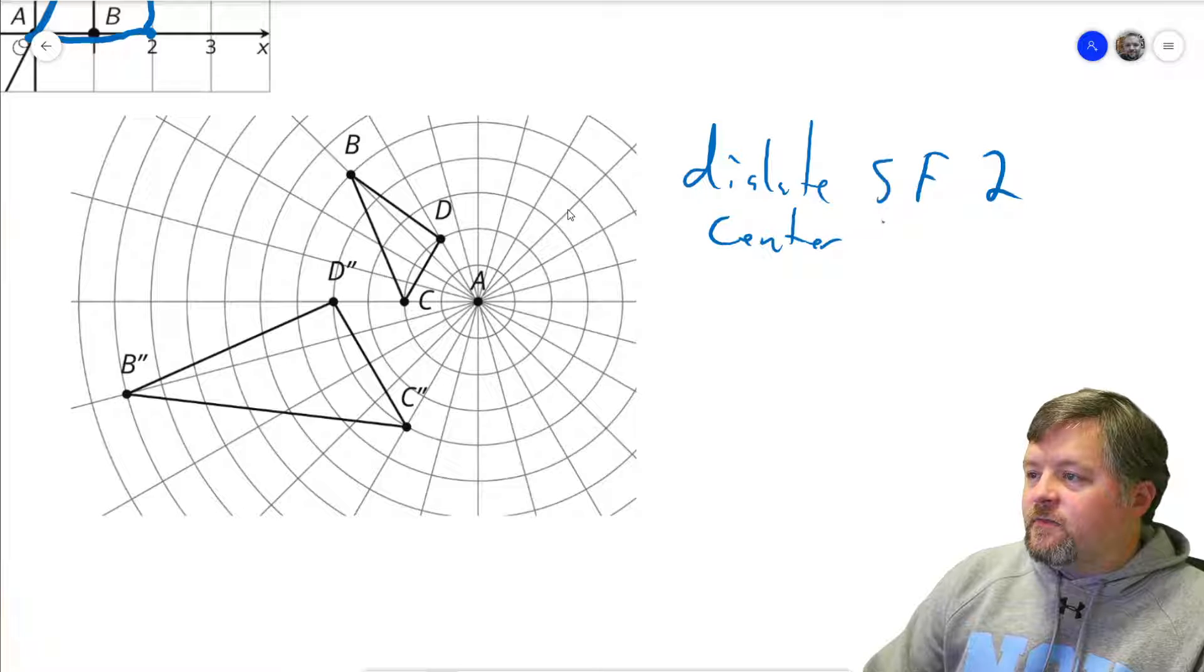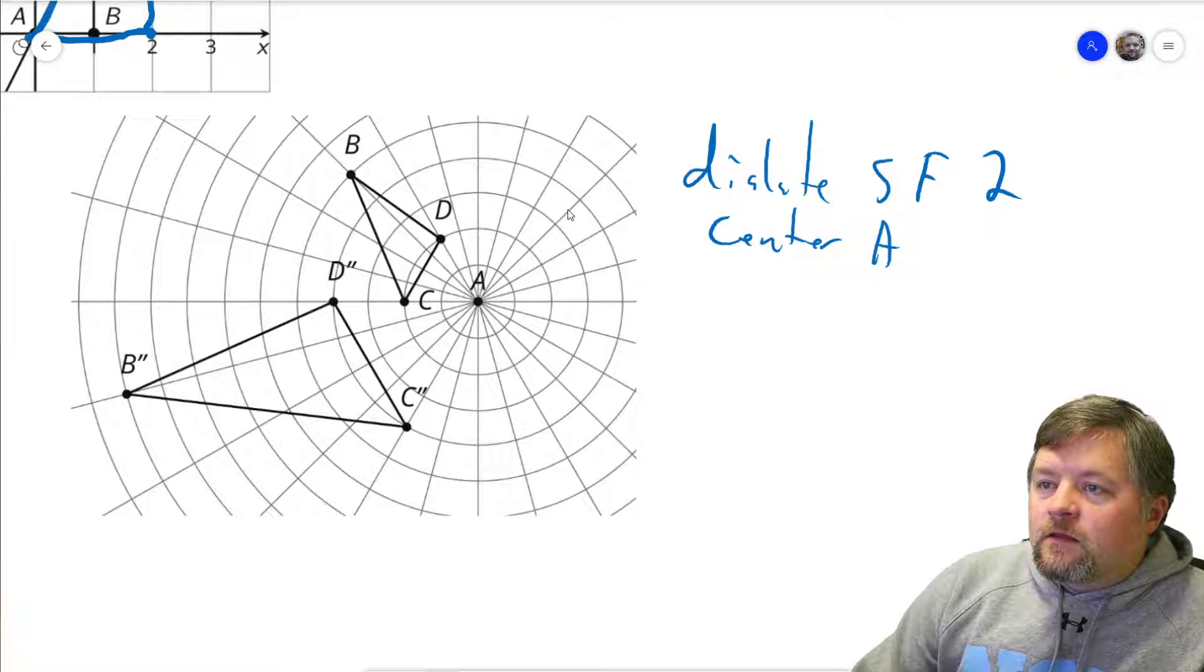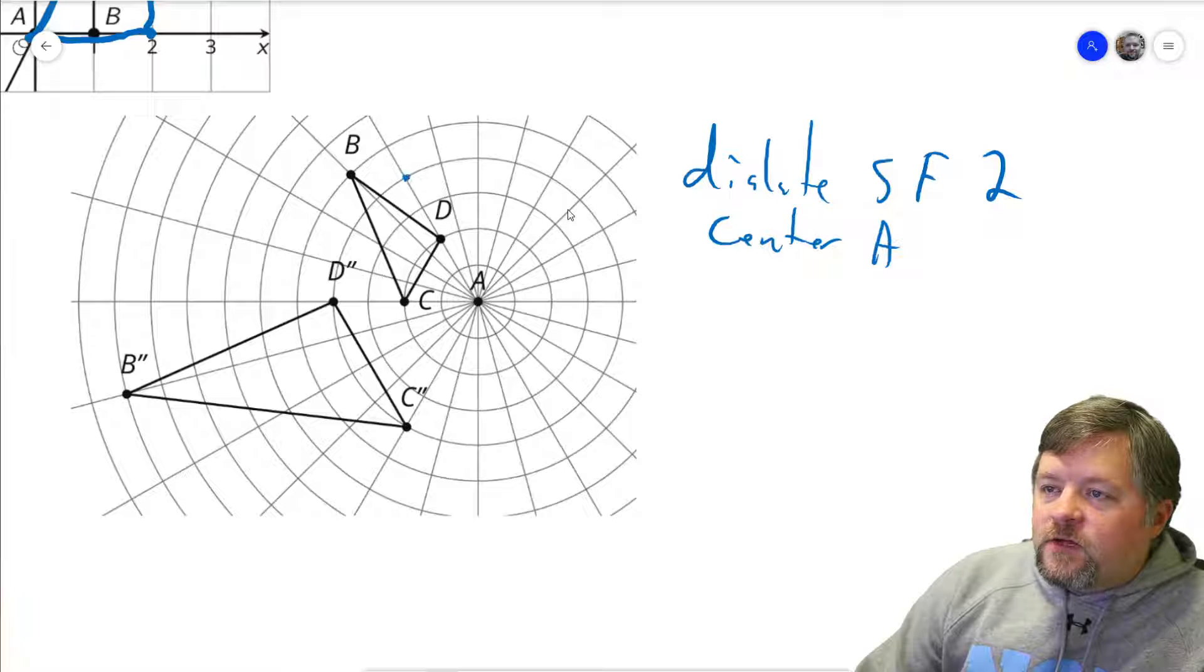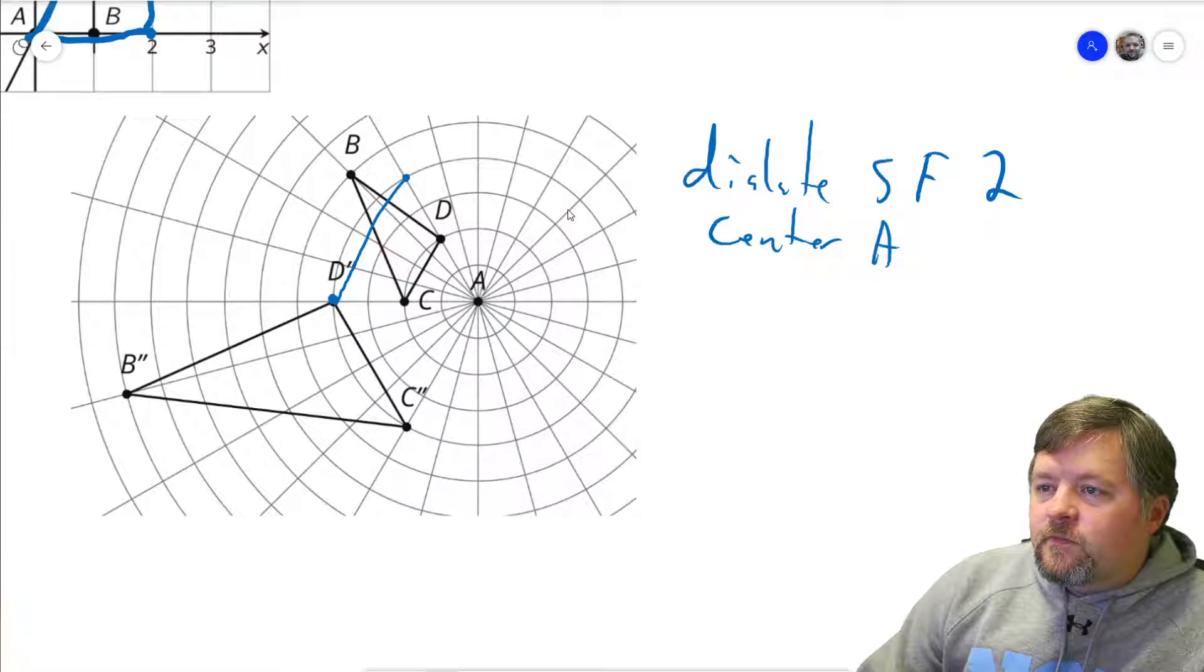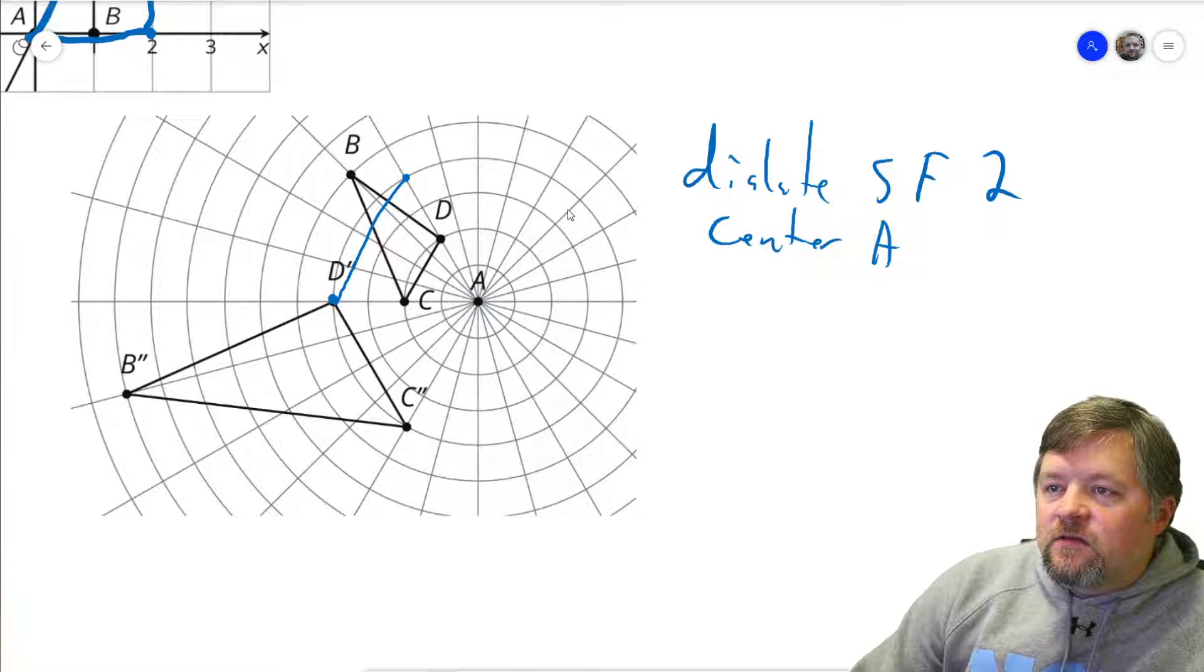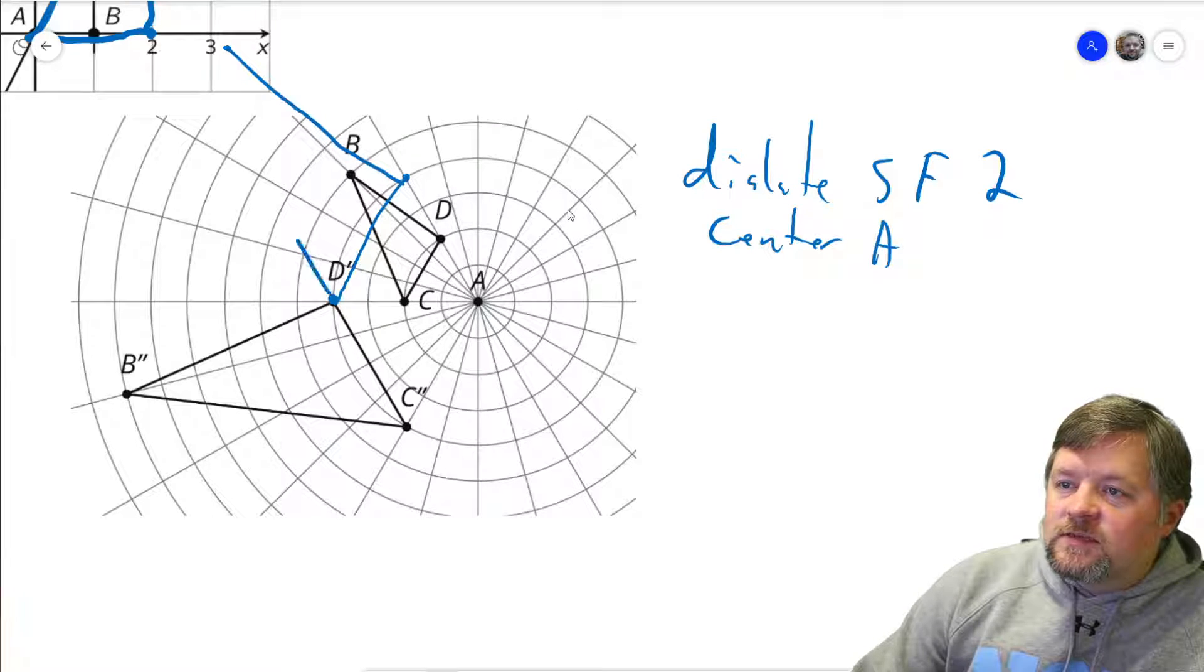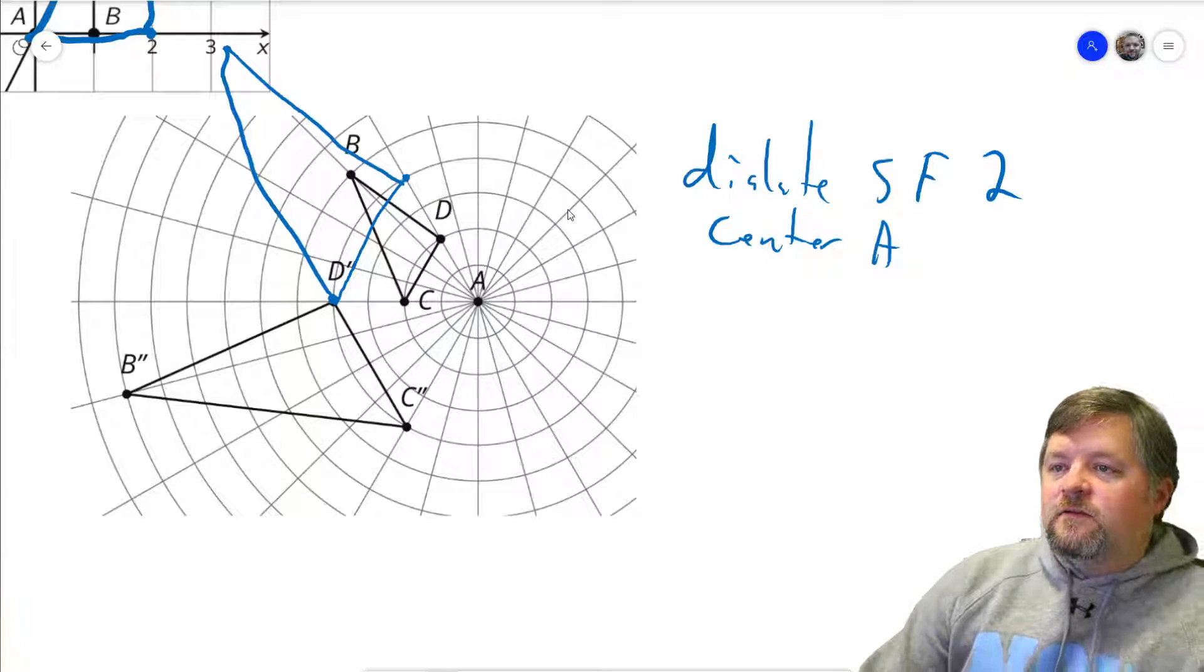Center it with a scale factor of two. So D would go from being two units to being four units, and from being five units to being ten units. That doesn't show up on this, so I'll kind of estimate that.